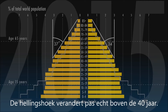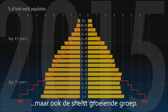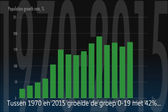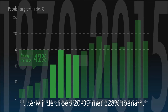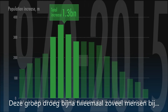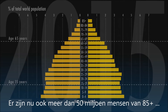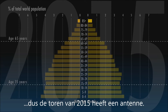The angle of the slope changes most markedly only after the age of about 40. In 1970, the youngest had not only been the largest, but also the fastest-growing section of the population. But between 1970 and 2015, the population aged 0-19 grew by only 42%, whereas the population aged 20-39 rose by 128%. This group added almost twice as many people to the overall numbers than the group aged below 20. There are also now over 50 million people above 85, so the Dome of 2015 has a spike.